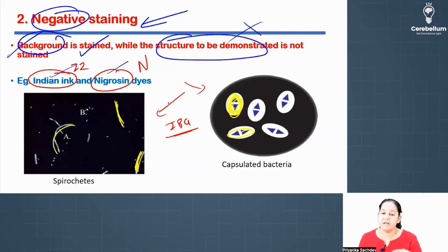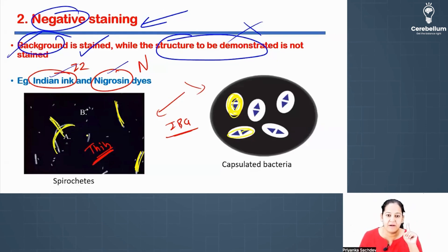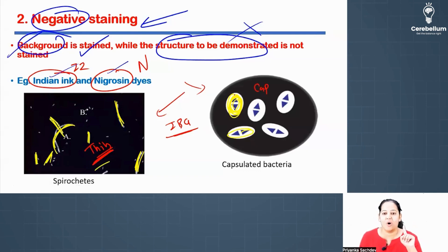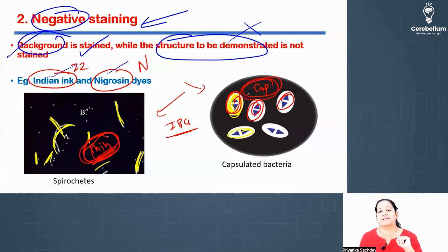One more thing to highlight: negative stain is used at two places. Number one, for thin bacteria — specifically spirochetes, which are thread-like thin bacteria. Number two, for capsulated bacteria and capsulated fungi. So thin bacteria and capsulated organisms are the two main utilities of negative stain. This is visible in the images as well.